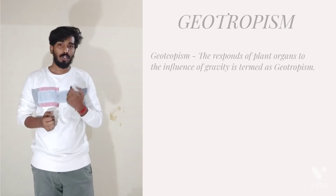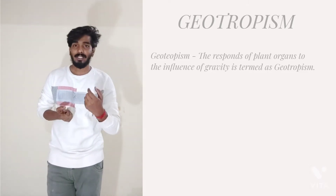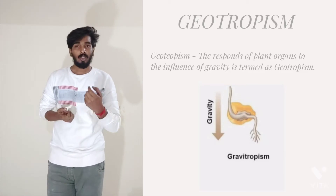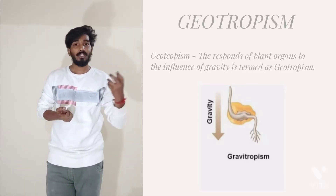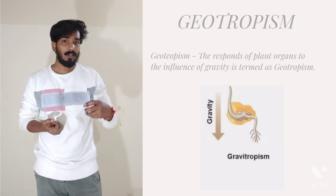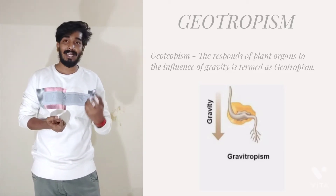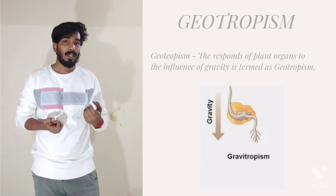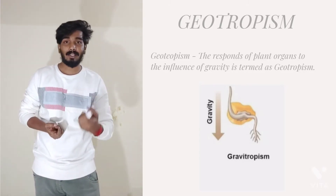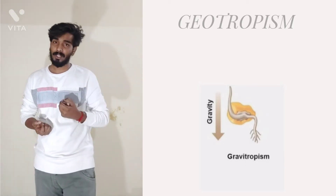As we all know, geotropism — geo means earth, tropism means any curvature movement of a plant organ or axis toward a certain source of external stimuli. In geotropism, the gravitational force or the earth's gravity is the external source. That means the curvature movement of plant axis or organs toward the source of gravity is known as geotropism.